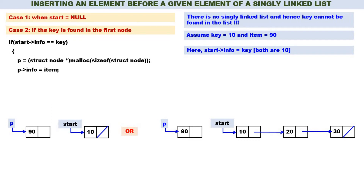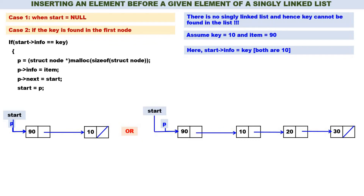Now carefully understand: 90 has to be inserted before 10. Therefore P->next should contain the address of start, so P->next = start. Then start should come back and contain the address of 90, because 90 is inserted before 10. Therefore start = P in both cases. You can observe that 90 is now inserted before 10. This logic is very simple and straightforward.